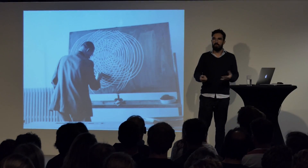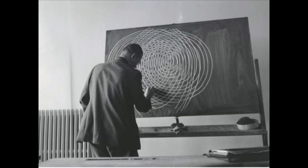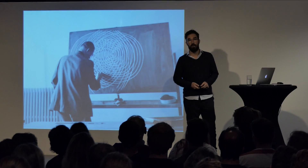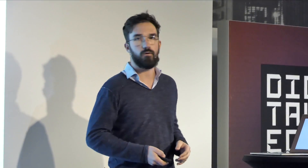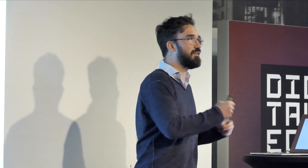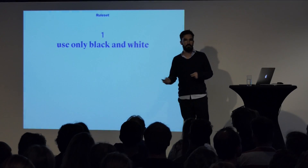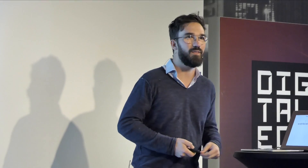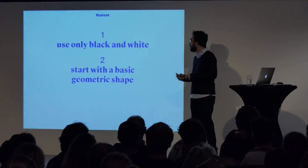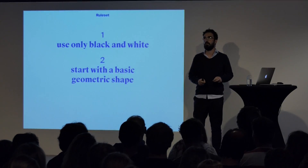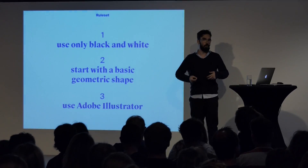This is how people worked back then in 1969 — they used pens and papers and had to calculate all the distances between rectangles and other shapes. It was real hard work. Today we have much better tools, and I thought, okay, I just want to remake some of these things using today's tools like Adobe Illustrator. But I felt I needed something like a rule set — a creative framework that forces me to stay in this creative space. So I restricted myself to three rules: use only black and white; always start with a basic geometric shape like a circle, triangle, rectangle, or line; and use Adobe Illustrator to draw vector graphics.